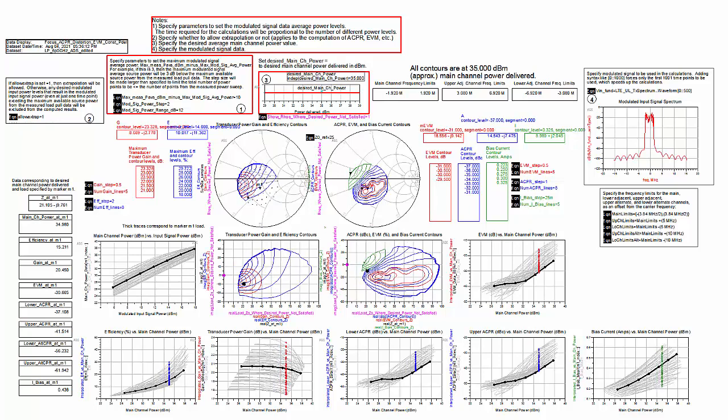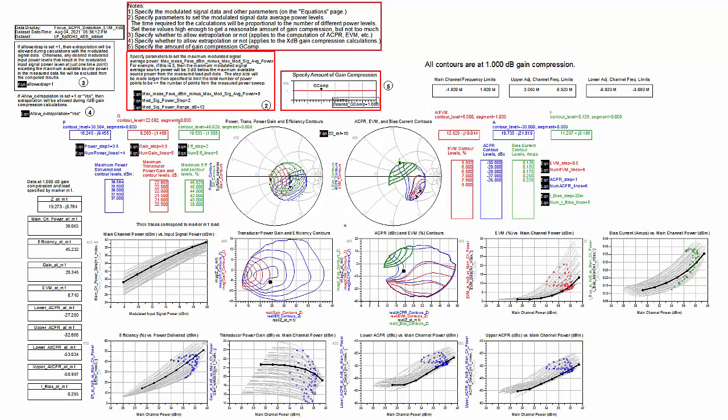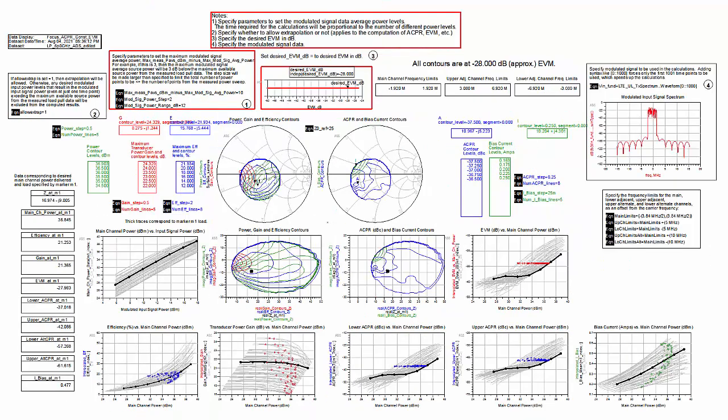Also, because of the modulated input signal power sweep, the example includes plots of data versus power and interpolation of the data at a constant output power, a constant gain compression, and a constant error vector magnitude.